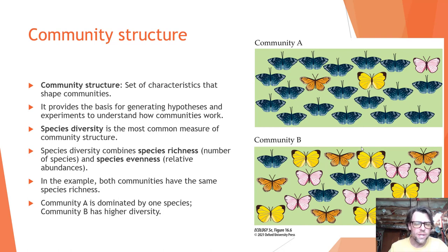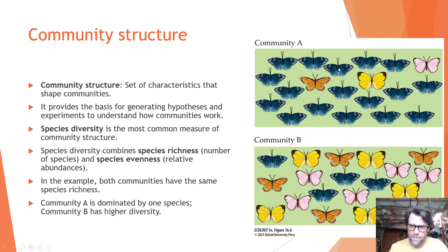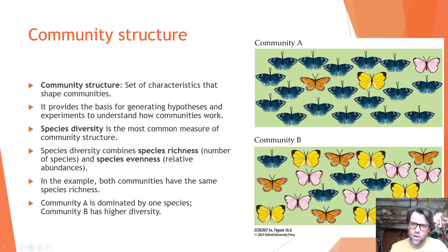Species diversity combines both species richness — the number of species — and species evenness, or the relative abundances. In this example, both communities have the same species richness of four butterfly species. Community A is dominated by one dark black species of butterfly. However, in community B, there is much greater evenness — the count for all species is more equal — so community B has higher species diversity.